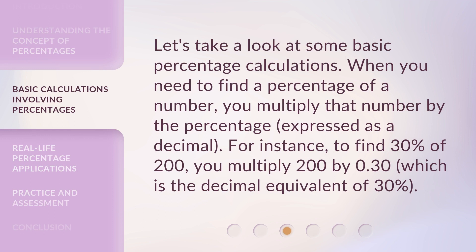Let's take a look at some basic percentage calculations. When you need to find a percentage of a number, you multiply that number by the percentage expressed as a decimal. For instance, to find 30% of 200, you multiply 200 by 0.30, which is the decimal equivalent of 30%.